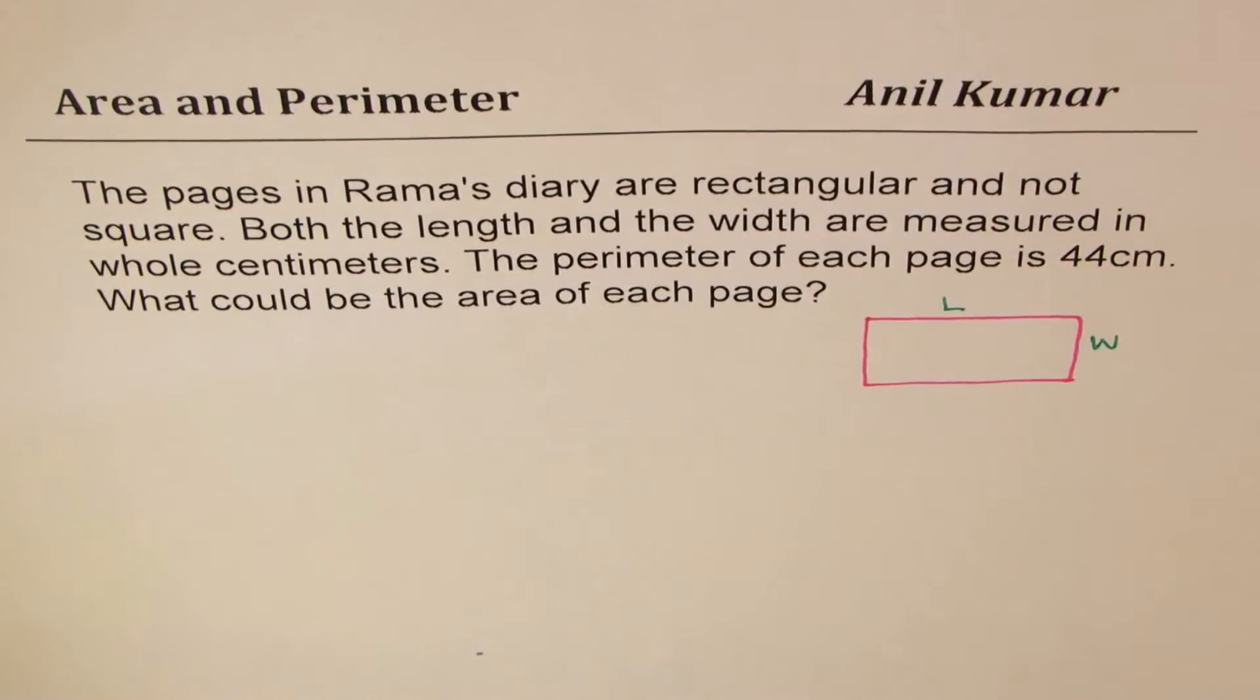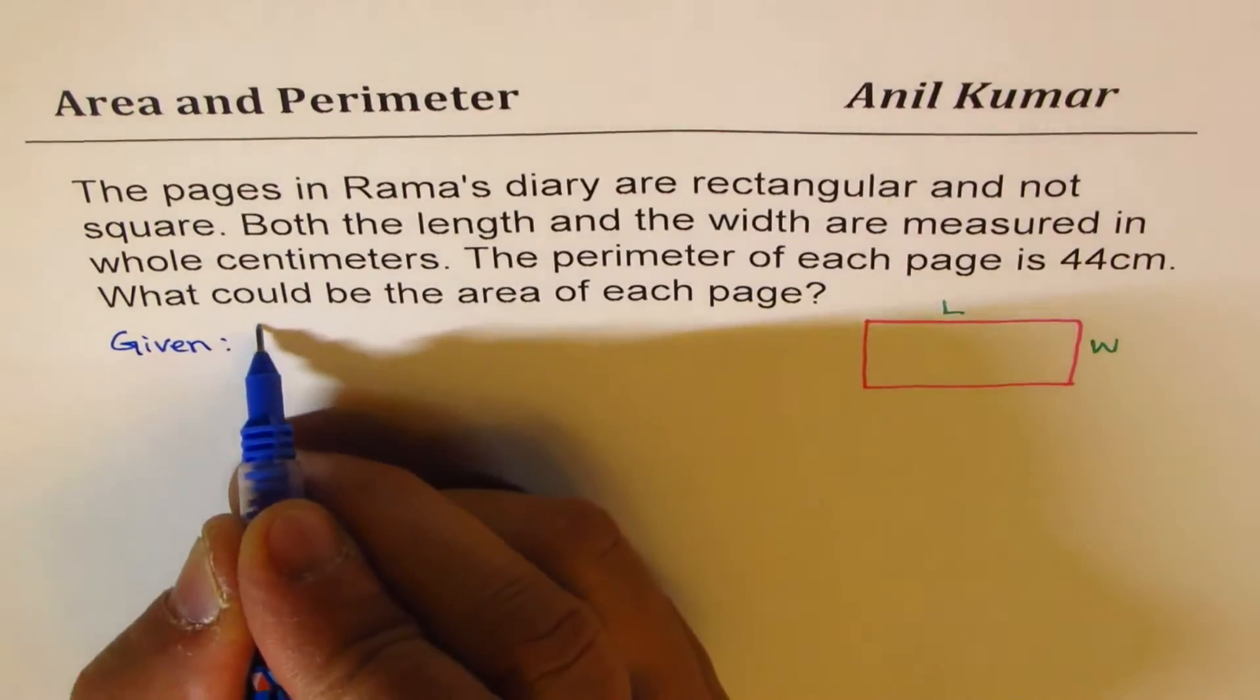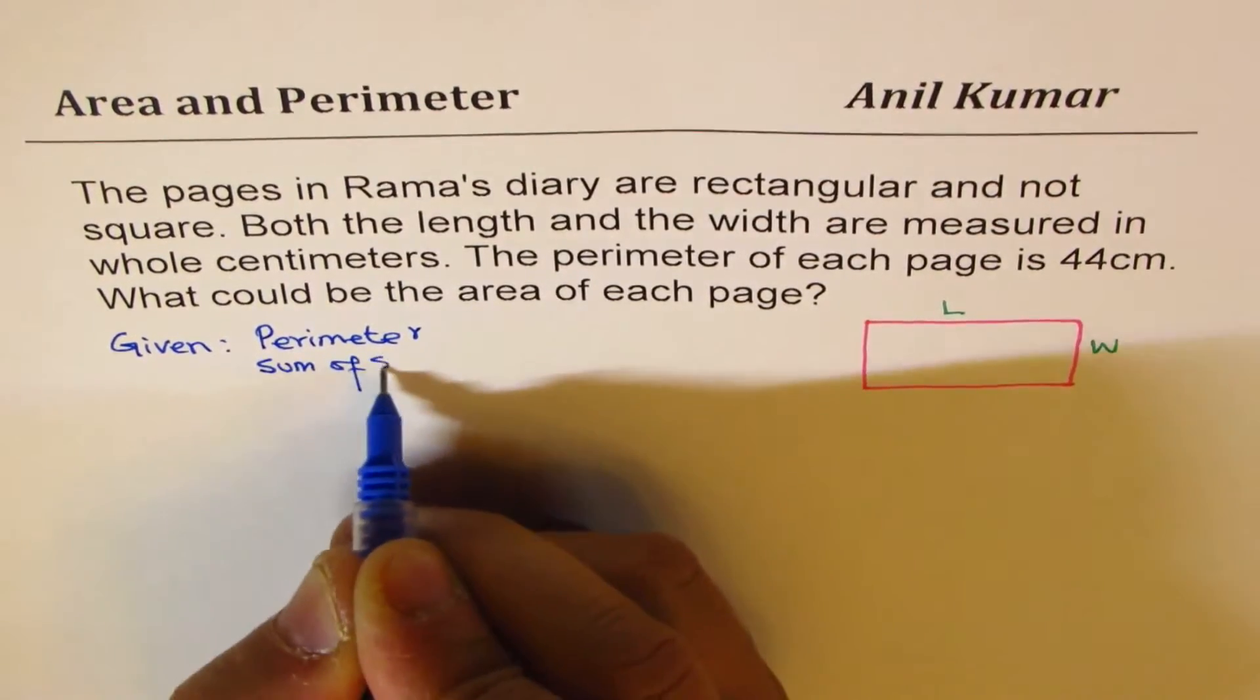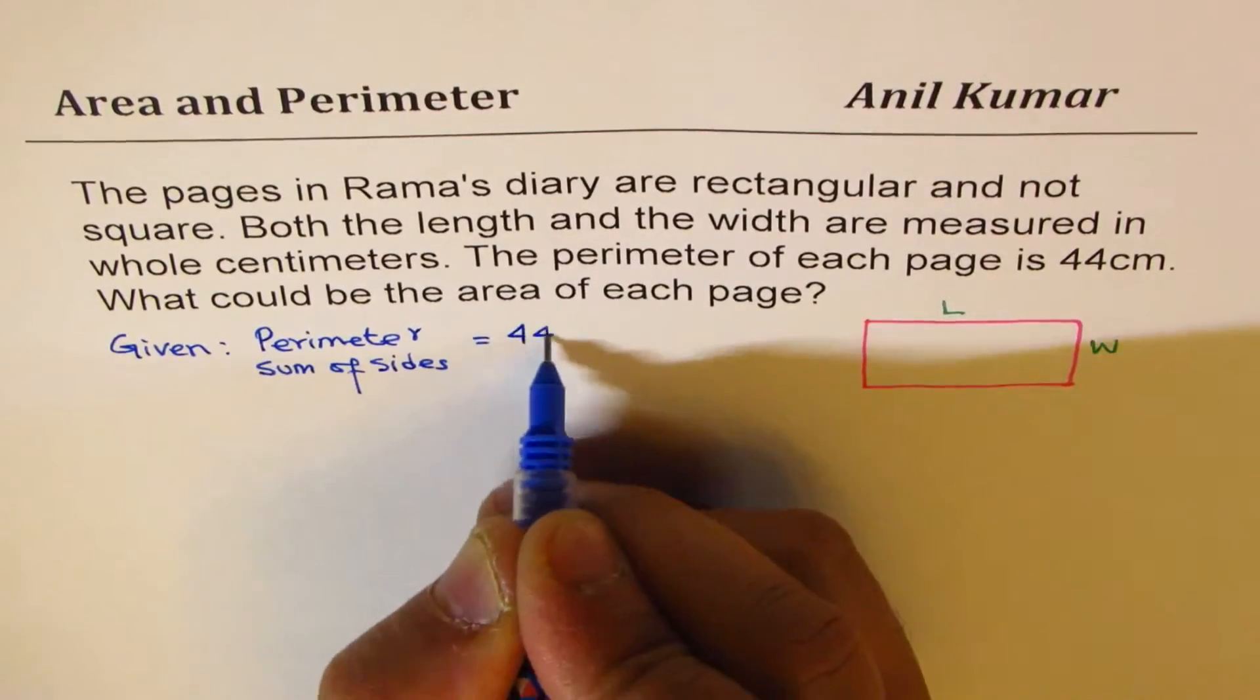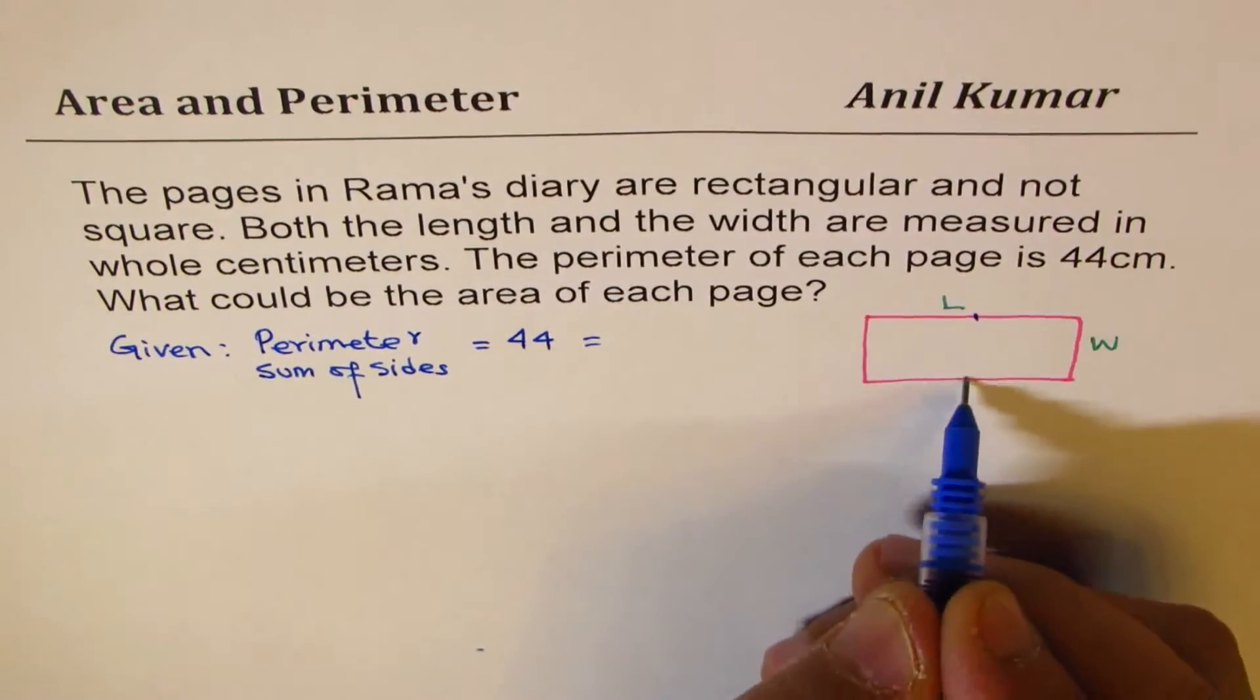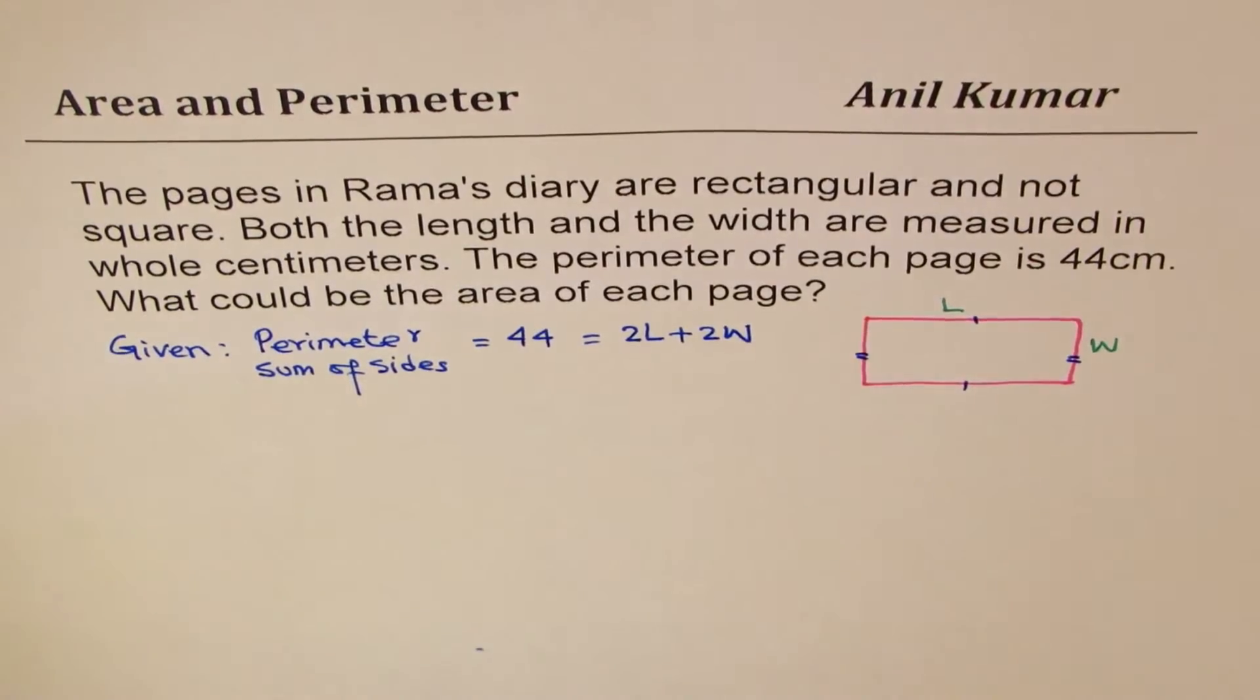What are we given? We are given that the perimeter is 44 centimeters. So perimeter, which is sum of sides, is equals to 44. That really means twice length since opposite sides are equal. So that means twice length plus twice width for this particular rectangle.